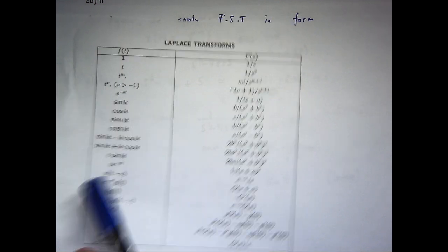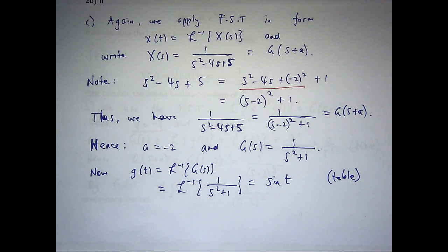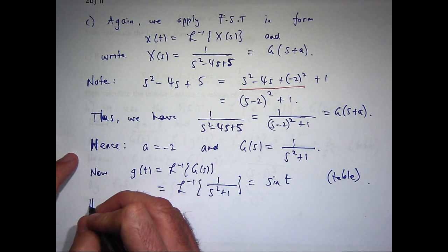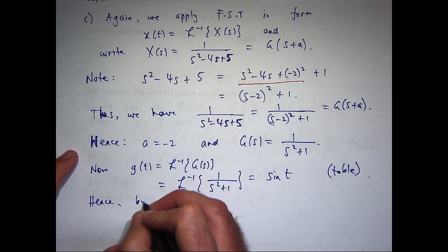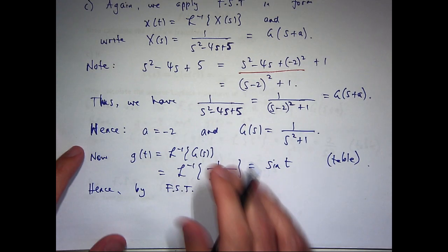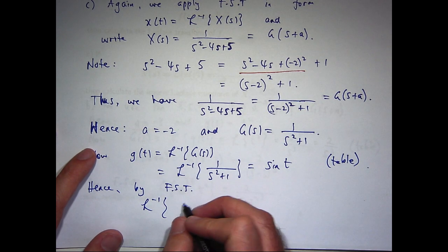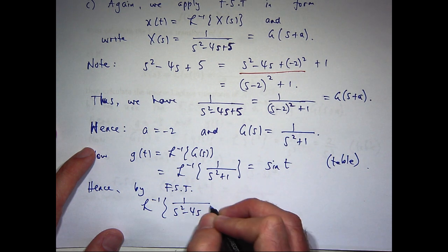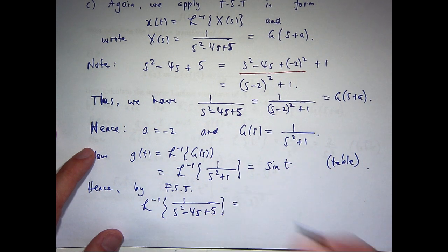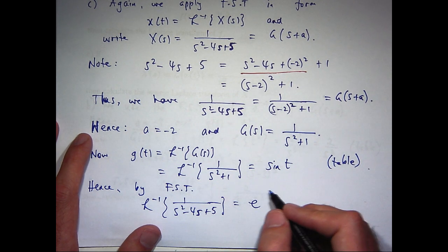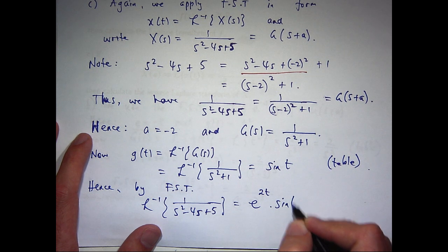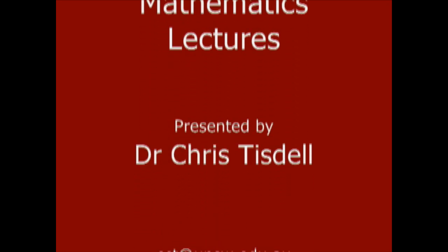So, the first shifting theorem then tells us that all we do is we take this little g of t. Multiply it through by an exponential, e to the minus a t. Here will be e to the minus, minus 2t. And then we can apply the first shifting theorem and just write down our answer. So, this is going to be e to the minus, minus 2t times sine t.